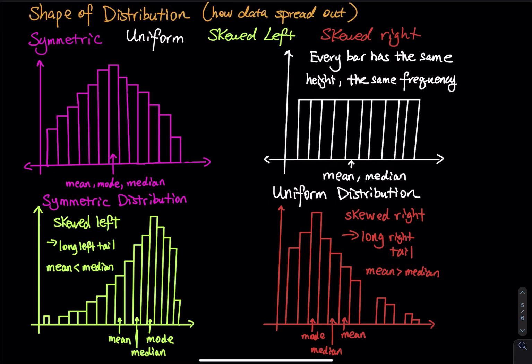In this video we are going to discuss the shape of distribution. The word distribution means how data spread out. Imagine you have a set of numbers — you toss those numbers into an empty picture and see how they spread out. The shape of the histogram describes the distribution.